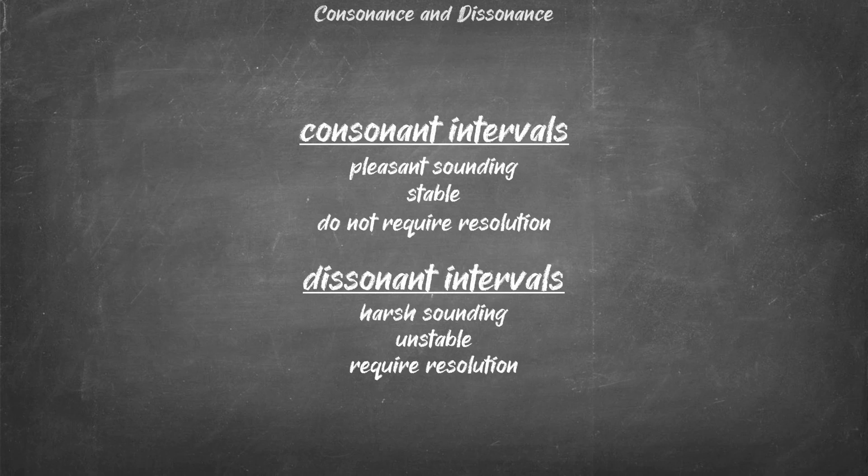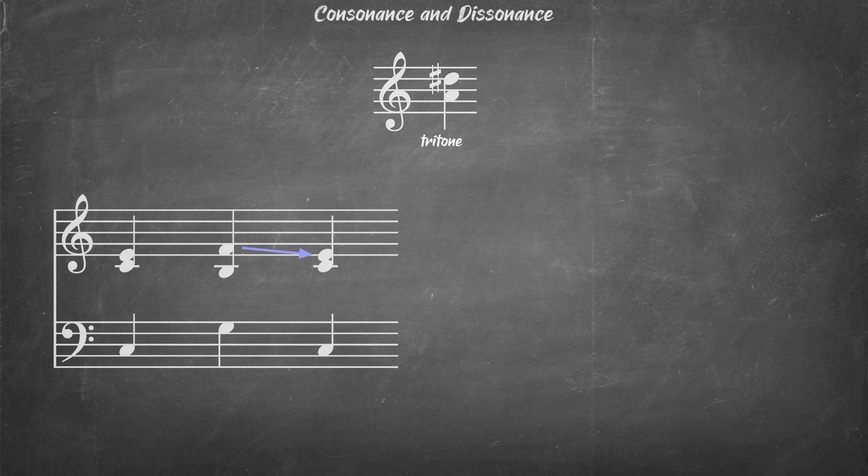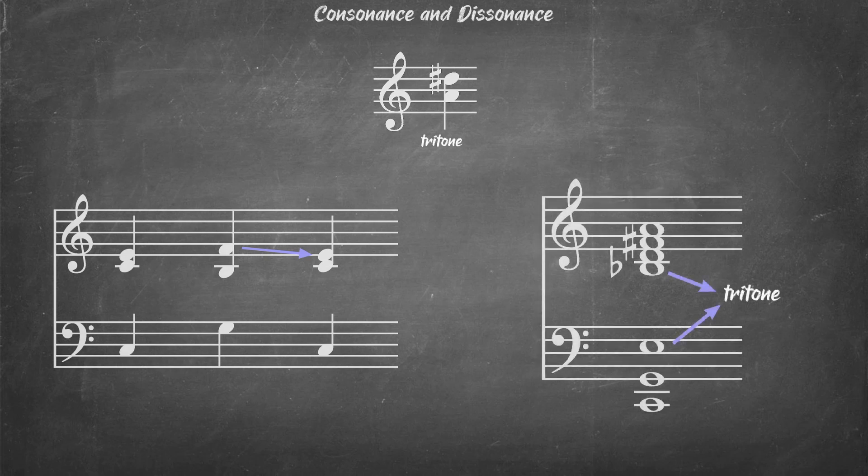Once again, the context matters, and I think what sounds unstable or dissonant in one piece of music might sound very stable and consonant in another. While the tritone dissonances require proper resolution in the 18th century piano sonata, for example, in jazz or blues on the other hand, that same interval is often considered stable.